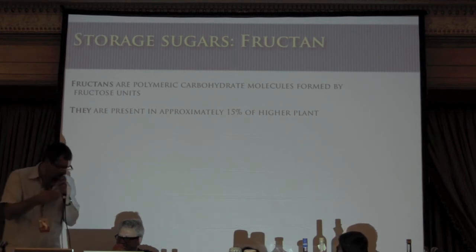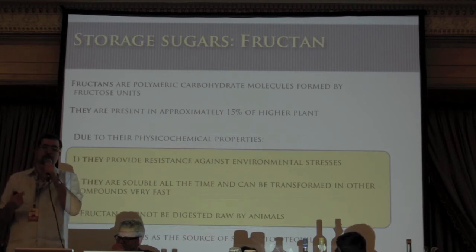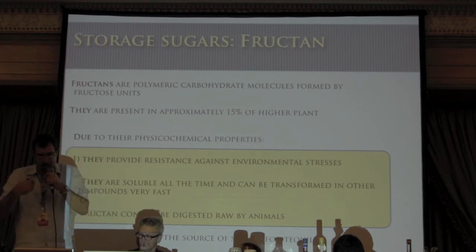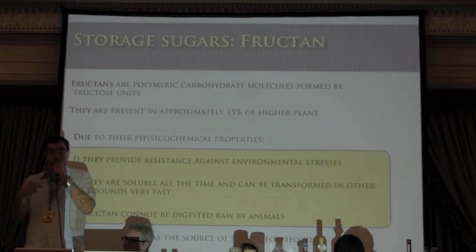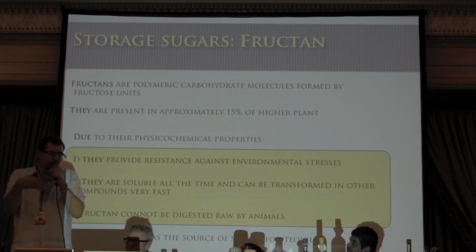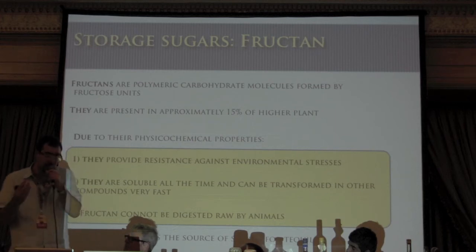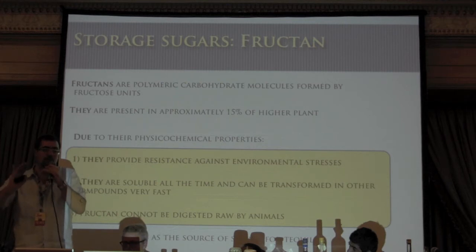Fructans are very rare — endives and chicory also have this kind of sugar, but not many plants do. The first nice property is they provide resistance against environmental stresses: these sugars can link to cell membranes and help tolerate freezing temperatures or intense heat, improving the thermodynamics of cell membranes. The second property is that fructans cannot be digested raw by animals — herbivores lack the enzymes to use this sugar, making it a great evolutionary defense. The only way to benefit from this sugar is by cooking and breaking it down.